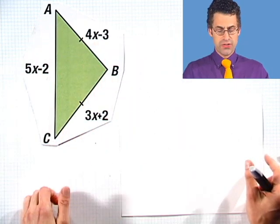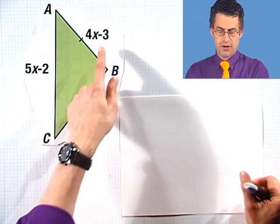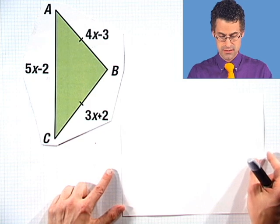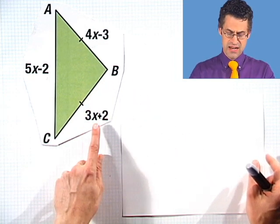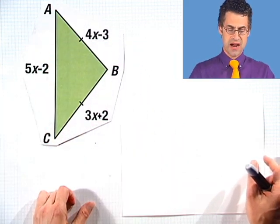And we're told the lengths of the various sides of this green triangle. This length turns out to be 4x minus 3, where x is something that's unknown to us. This length here is 3x plus 2 with that same unknown x, and the third length is 5x minus 2.